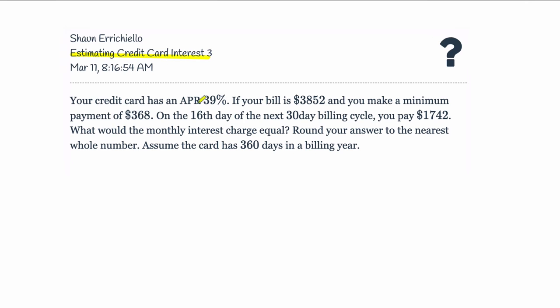The idea is that you have a credit card with an annual percentage rate of 39%, and you have this bill to pay. That's your bill. You make a minimum payment of $368, so in this case you pay that amount and you avoid some late fees and other things, but you still have interest on your remaining balance.